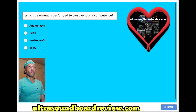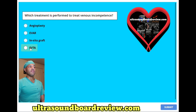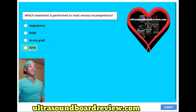Which treatment is performed to treat venous incompetence? A. Angioplasty. B. EVAR. C. In situ graft. Or D. EVTA. The answer is D. EVTA, or endovascular thermal ablation.